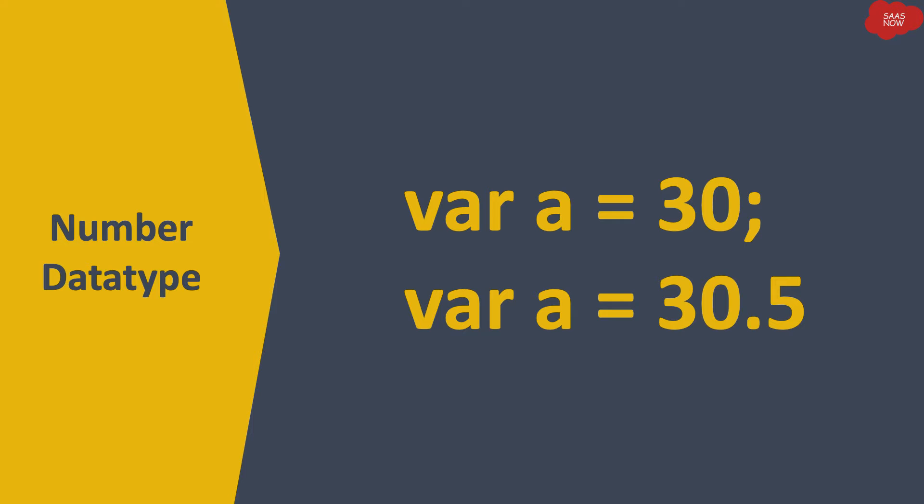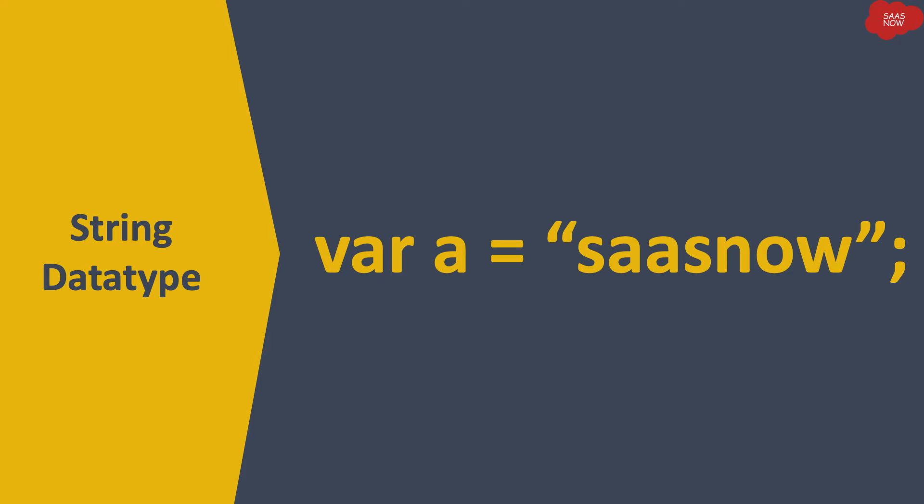Starting with the number data type — in this example, 'a' is a variable which stores the number 30, so 'a' becomes a number data type variable. A number variable can hold a number without a decimal and it can also hold a number with a decimal.